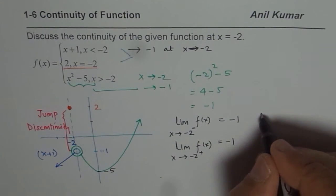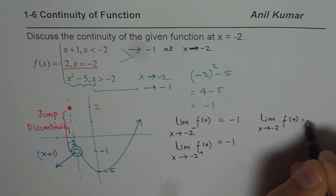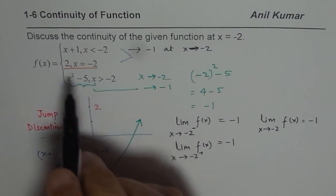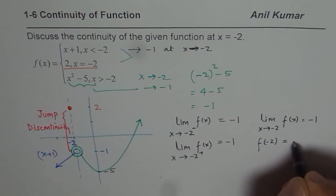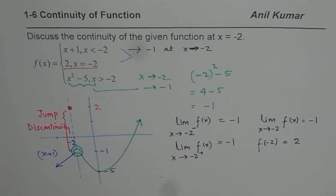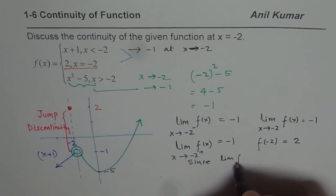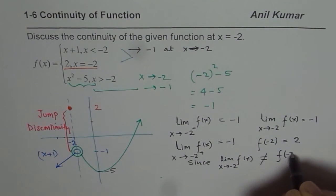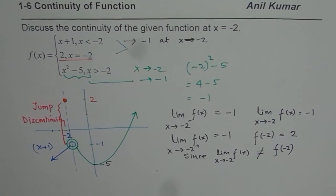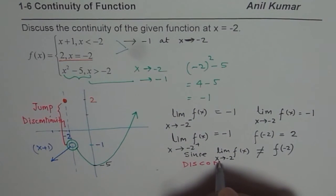So from here, you can say limit as x approaches minus 2 is indeed minus 1. But important thing here is, what is the value of the function at minus 2? But f of minus 2 is equals to 2. It is not minus 1. Now since limit of the function when x approaches minus 2 is not equal to the value of function at minus 2, we say that the function is discontinuous. Since this is not true, the function is discontinuous.